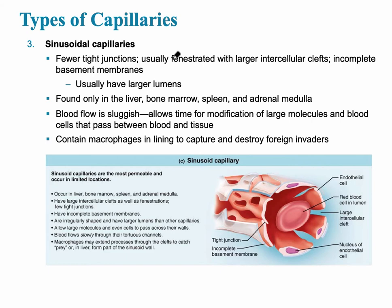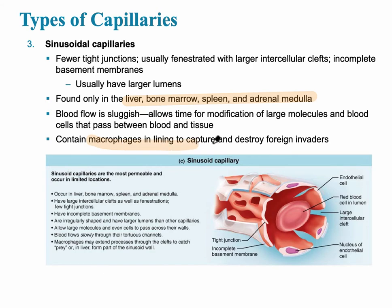So the continuous doesn't allow anything through. The fenestrated is more permeable, and the sinusoidal is the most permeable. They are found in places like the liver, the bone marrow, the spleen, and also the adrenal medulla. It contains macrophages in the lining to capture and destroy foreign invaders.